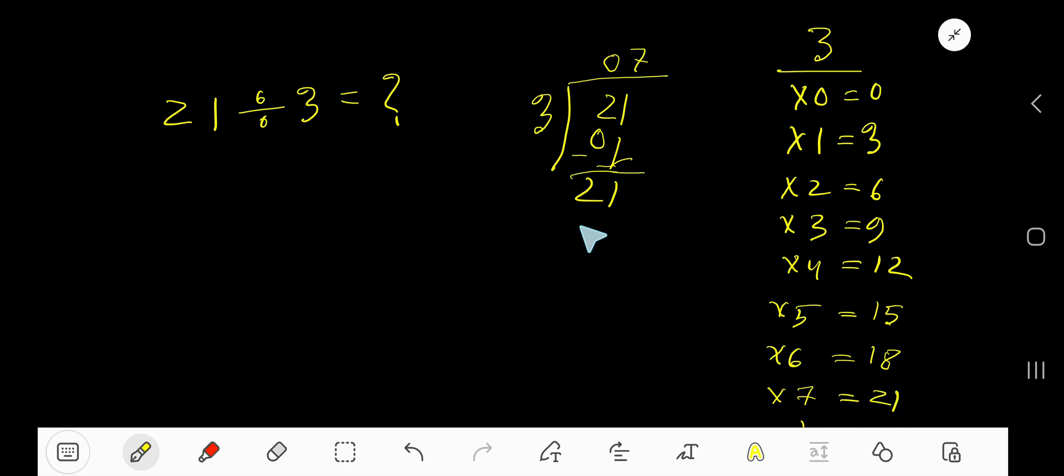7 times 3 is 21. Subtract, and you get 0. So your remainder is 0, and there is no digit left in the dividend. Therefore, 7 is our answer.